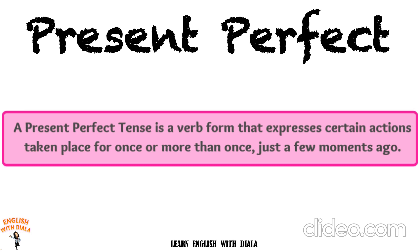How do we change into the present perfect tense? There are three ways to change a sentence to the present perfect tense, and we have three decisions: whether we change them into the affirmative, the negative, or the interrogative form.